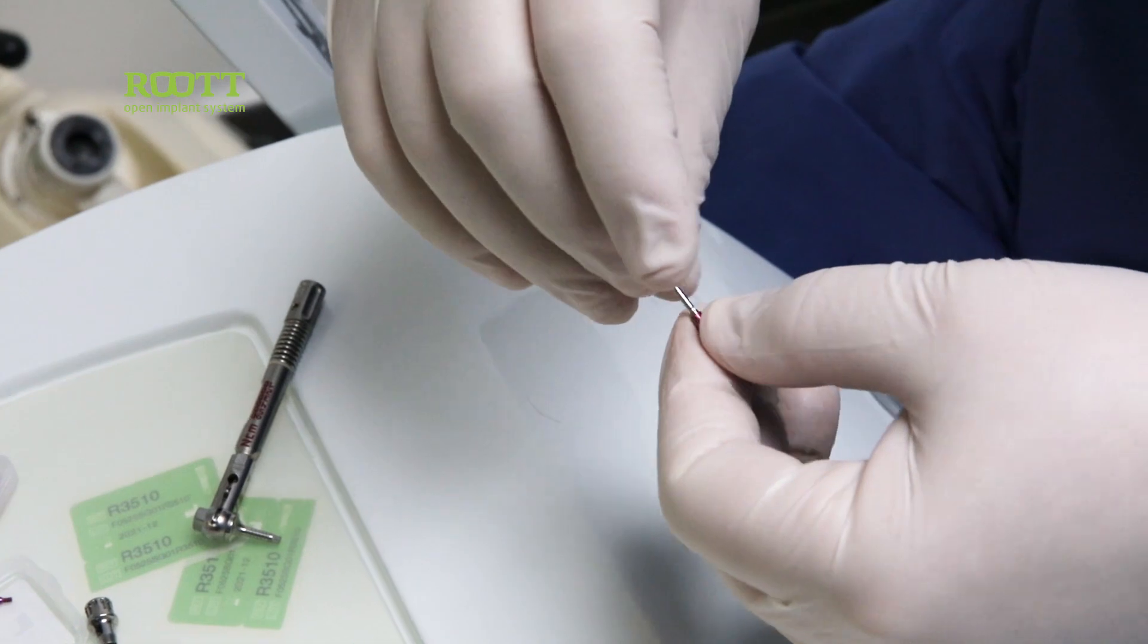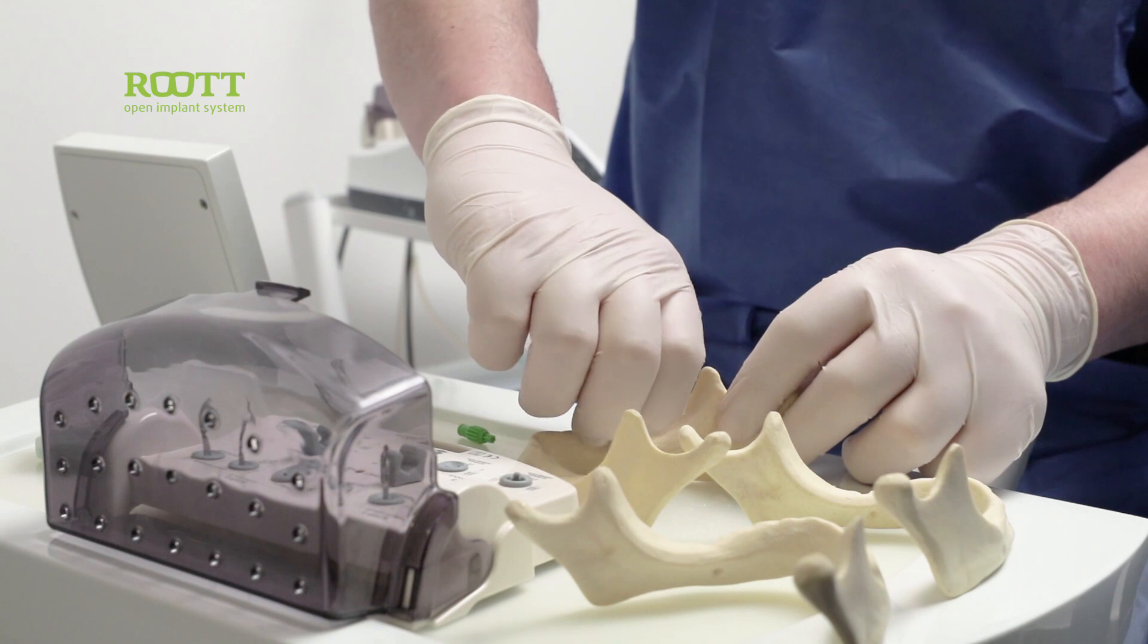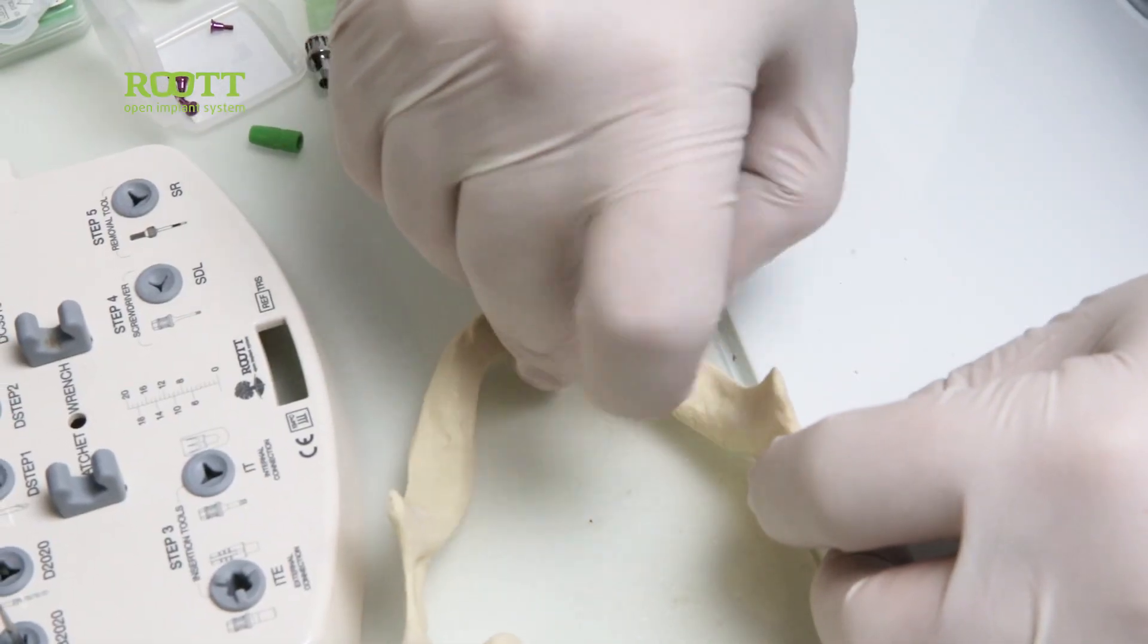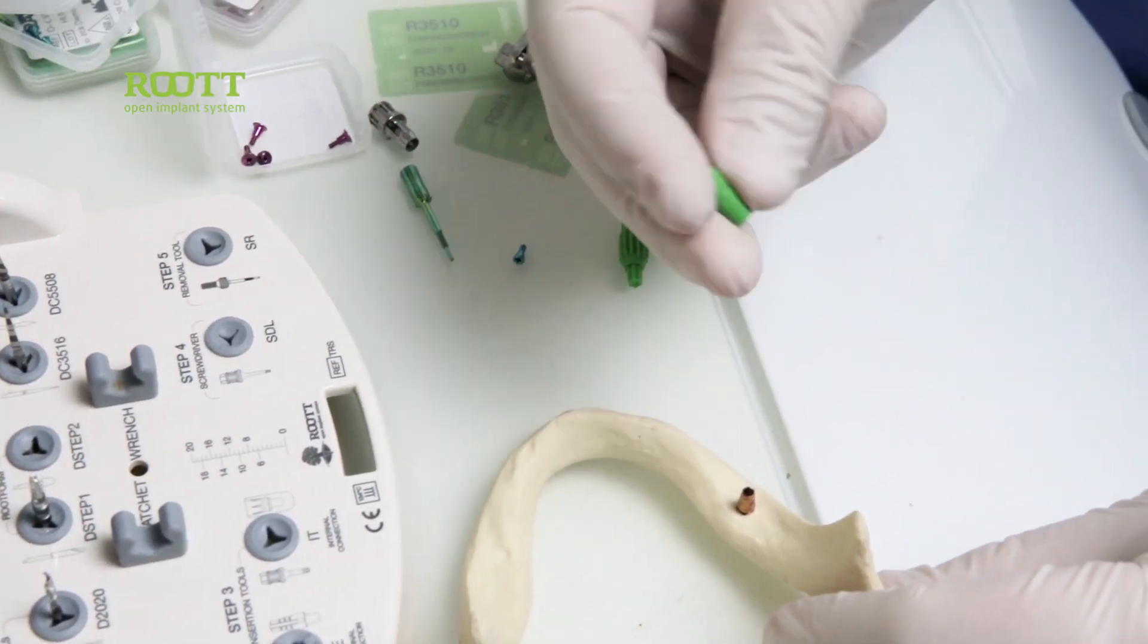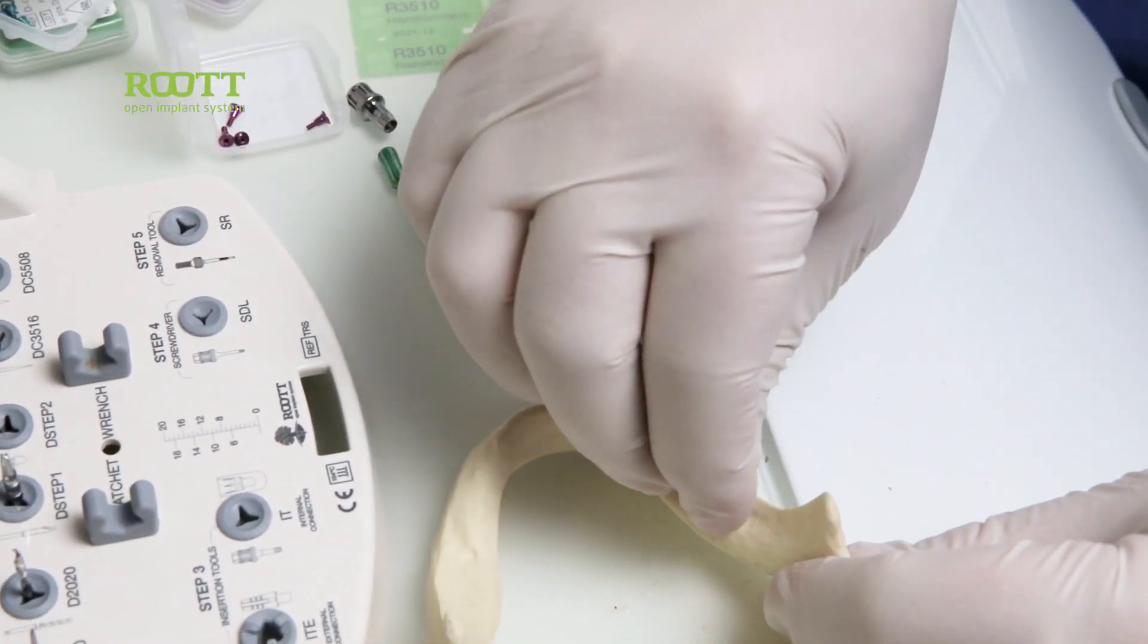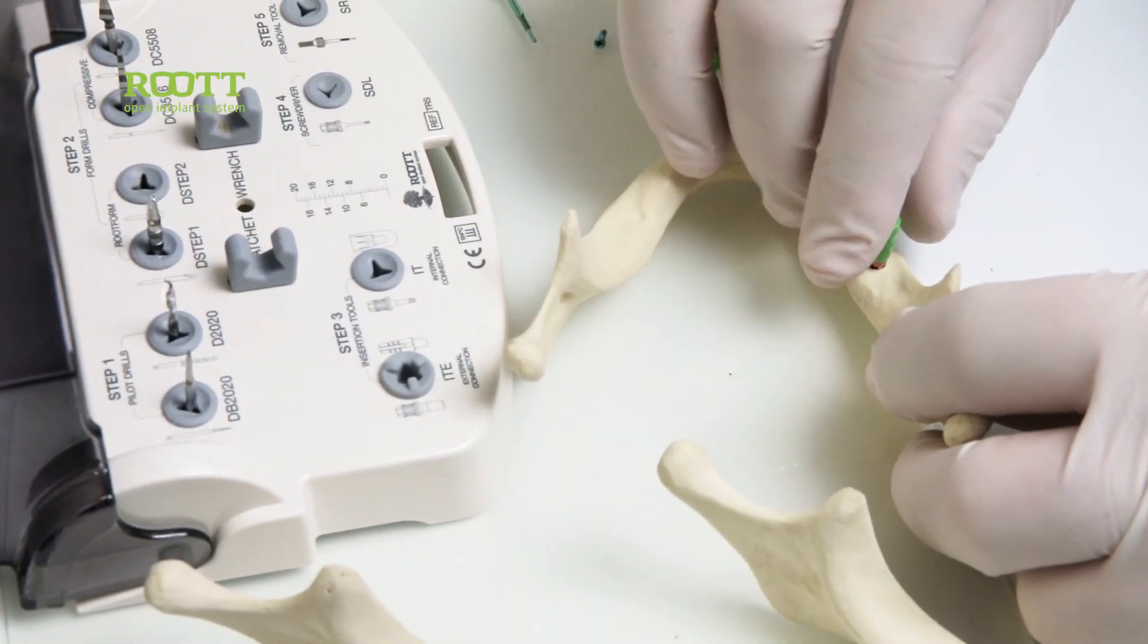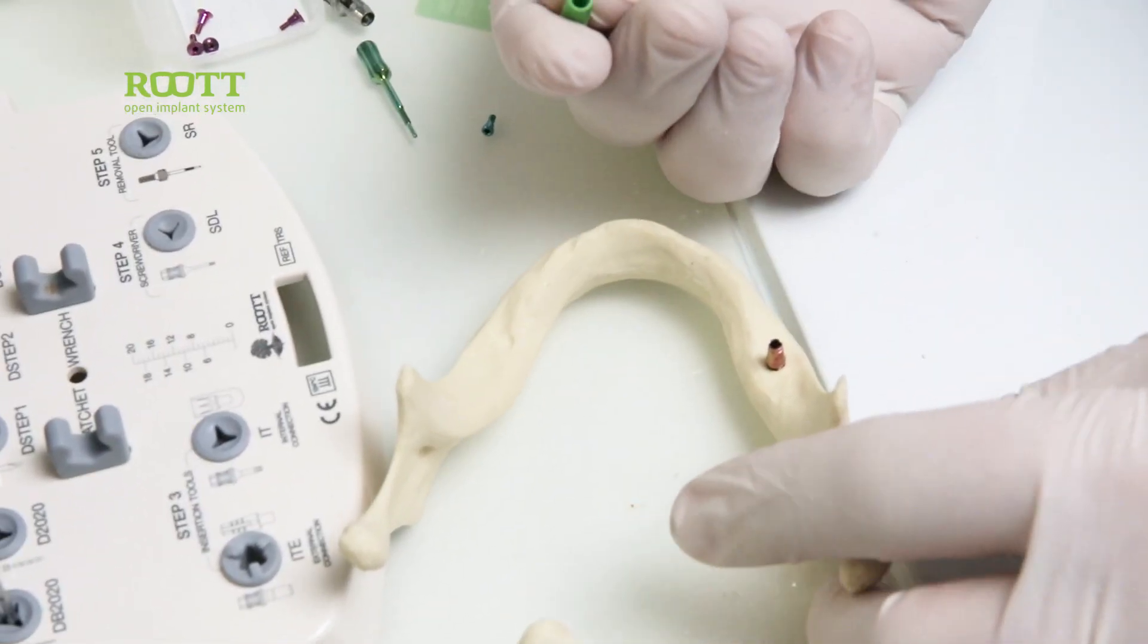Or we can use these implant holders. We put once again this abutment that can be used as a final abutment also. We put the half of the implant holder on it and we take the impression. This will go out with the impression.